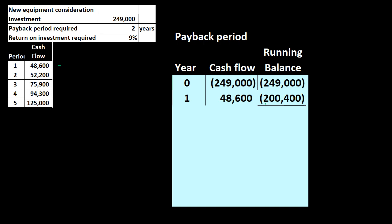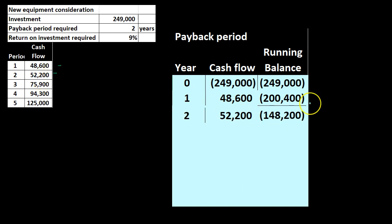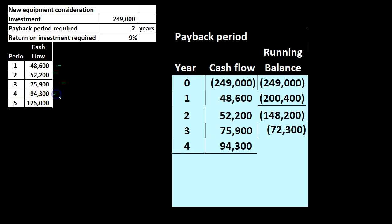In Excel, this is a really nice and easy thing to do — we can set the first formula and use autofill to copy it down. What we're looking for is the time period at which this negative running balance turns positive, because that's the period in which the cash flows received are greater than the initial payment. In year one we have $48,600, and in year two we have $52,200 — the $200,400 minus $52,200 gives us $148,200. We're still negative, so we need to keep going.